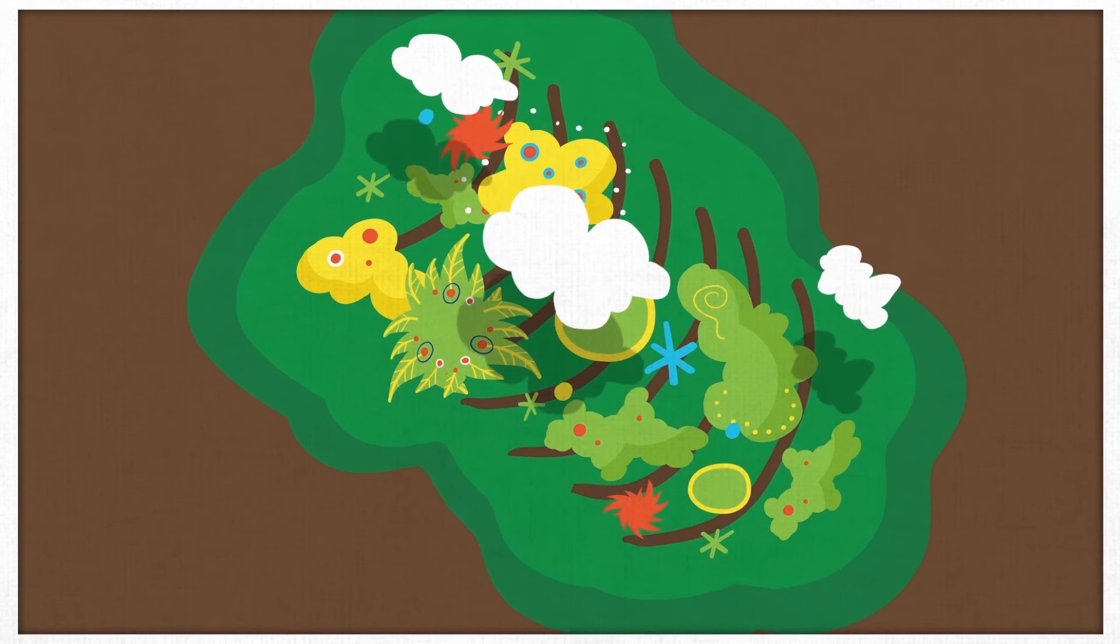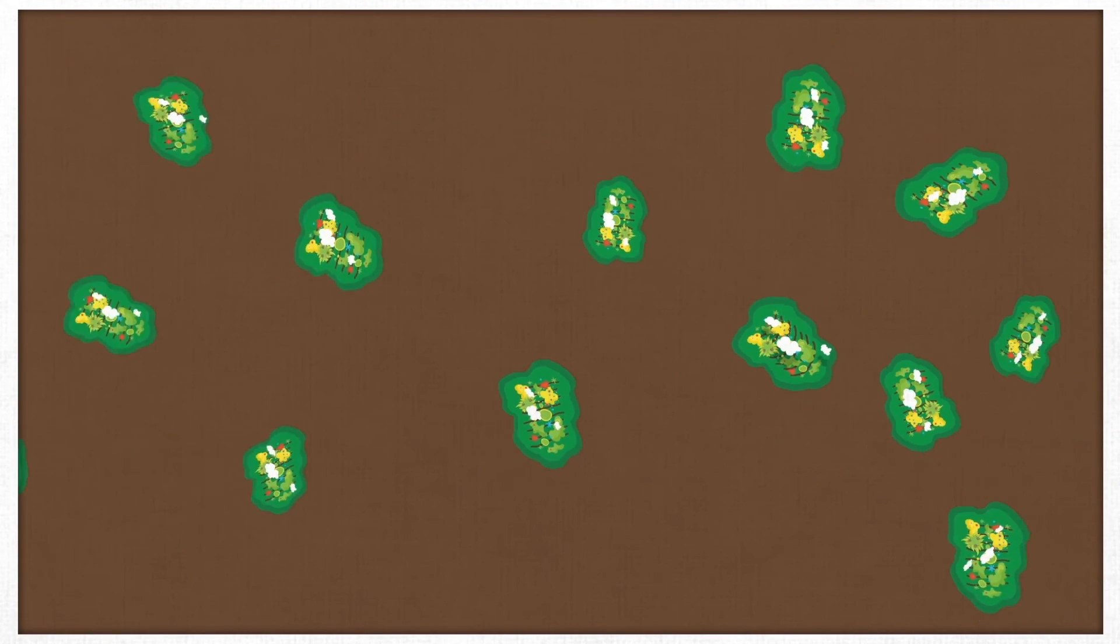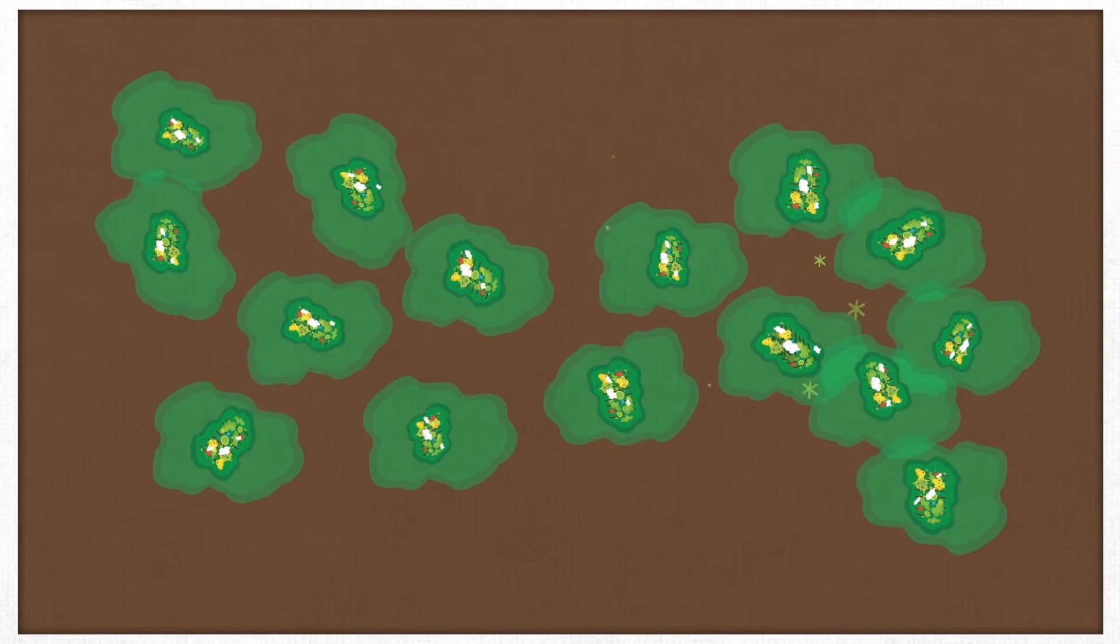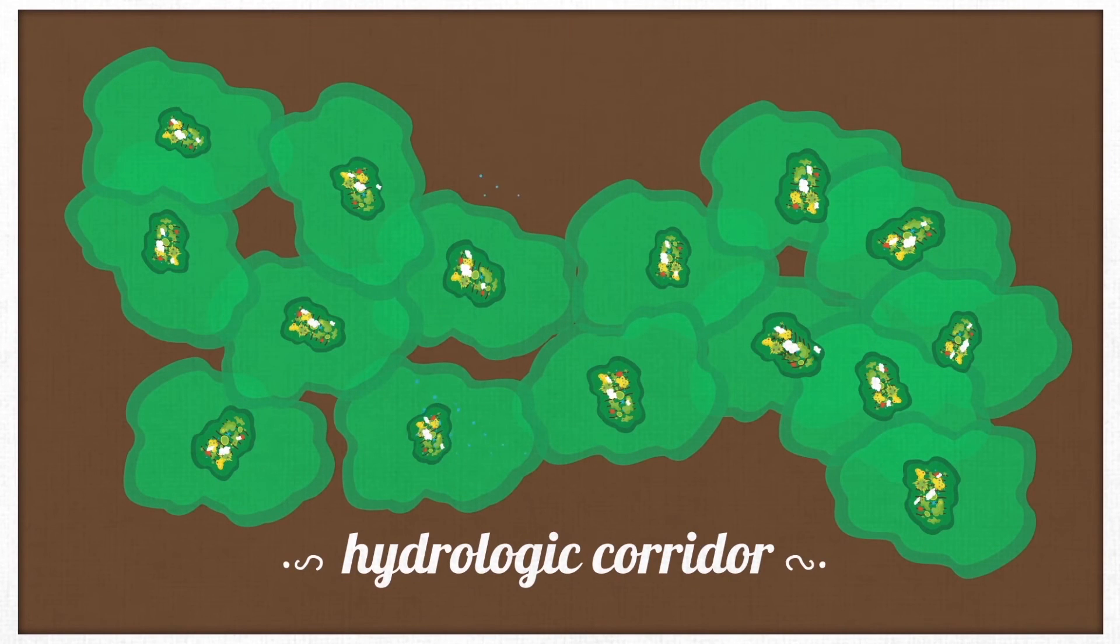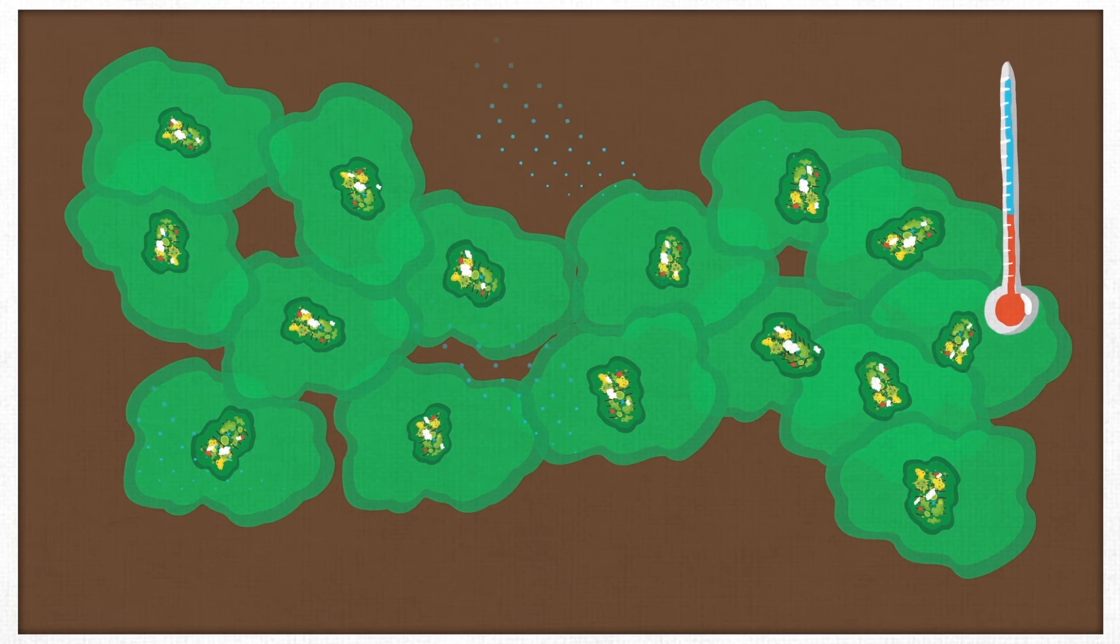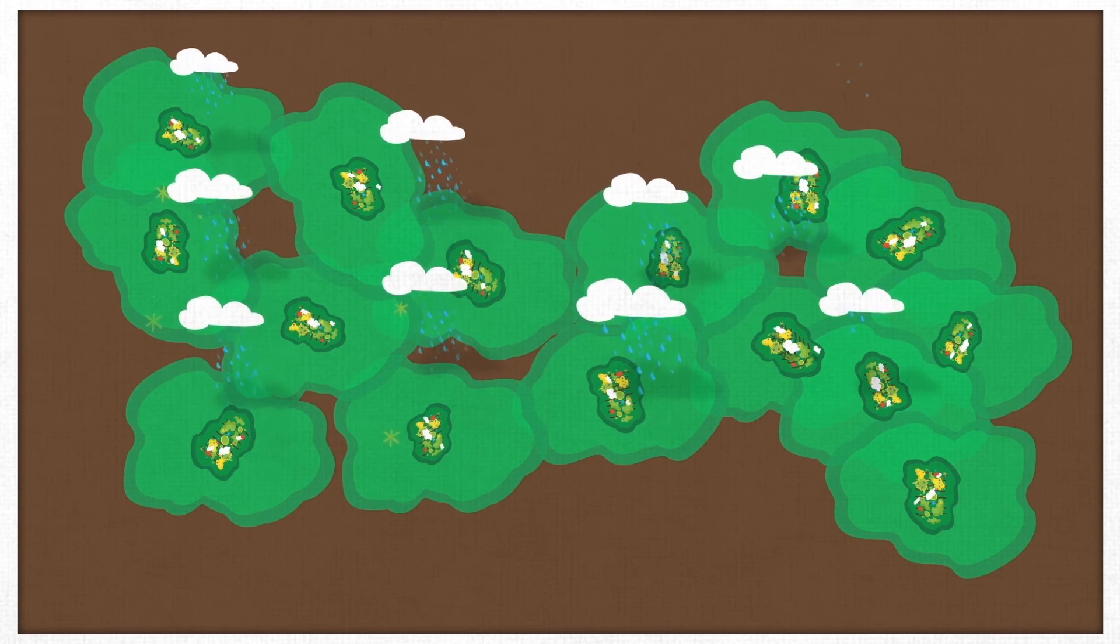Together, these locations impact the regional climate, and in doing so, create a so-called hydrologic corridor. The network of interventions on the ground results in atmospheric cooling and more evenly distributed rain on a large scale.